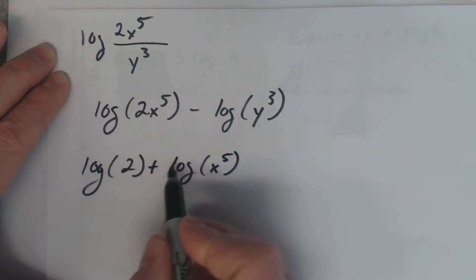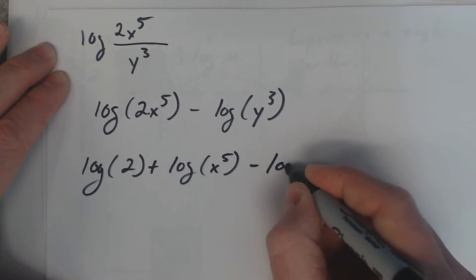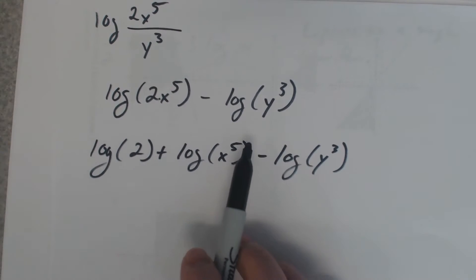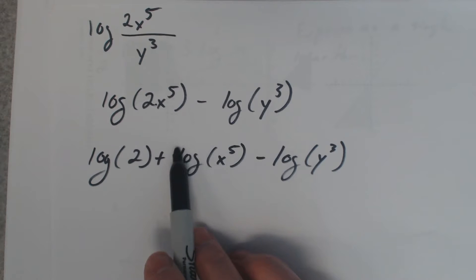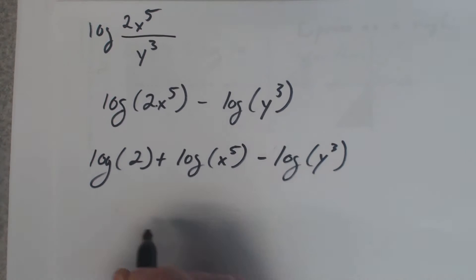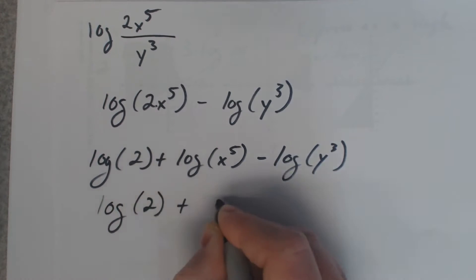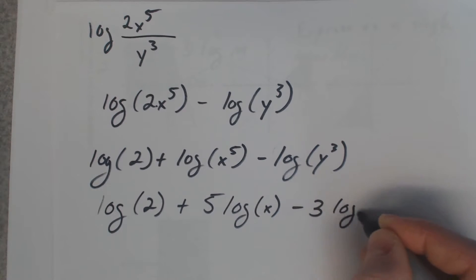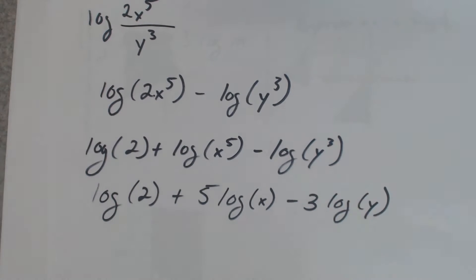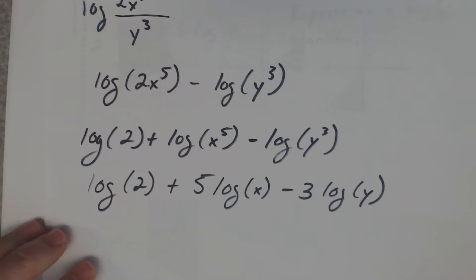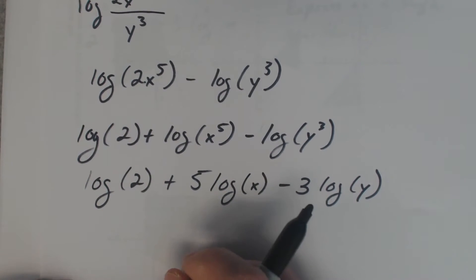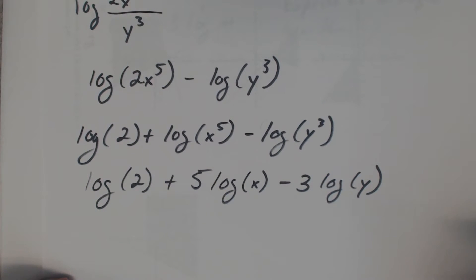So I split those two pieces up with addition and we still got this guy here. There's another property that says if you have a power, you can just pull it out to the front. There you go. We've expanded it all the way out. As far as we can go, none of that stuff would simplify log of two. It's not a nice whole number. So, that's as far as you can go.